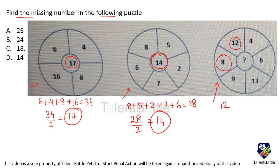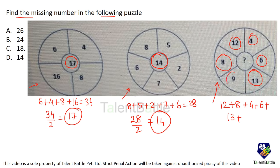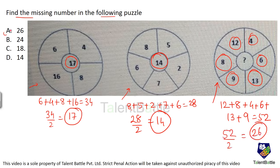By the same logic, for the third wheel: 12 plus 8 plus 6 plus 6 plus 4 is 36, plus 13 is 49... actually totaling up: 12 plus 8 plus 6 plus 6 plus 4 gives 36, plus 13 plus 3 comes to 52. So 52 divided by 2 equals 26. The answer is option A: 26.